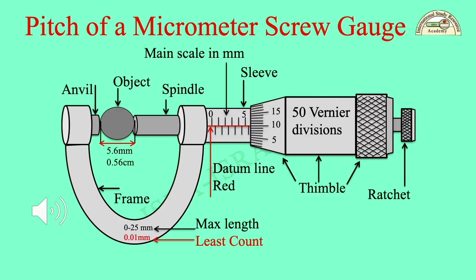Look at the working of this micrometer screw gauge. You can see an object between the anvil and spindle. The anvil is fixed with its frame, while the spindle can be moved forward or backward when the thimble is rotated clockwise or counterclockwise respectively. Therefore, this spindle works like a screw. A horizontal millimeter scale is engraved on the sleeve, representing the main scale reading. When you give one complete rotation of the thimble in the counterclockwise direction, you can read the magnitude of pitch on the scale given on the sleeve.